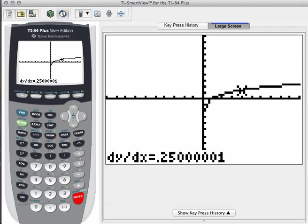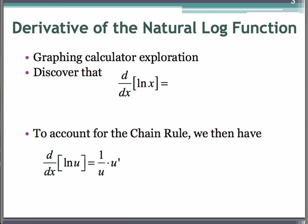So that really becomes our rule. The rule for the derivative of natural log of x is simply going to be 1 over x. Now to account for the chain rule, if you were to have u as a function of x, then the derivative is going to be 1 over u times the derivative of u. We have a bunch of practice problems lined up, so you'll get a lot of practice in doing that.